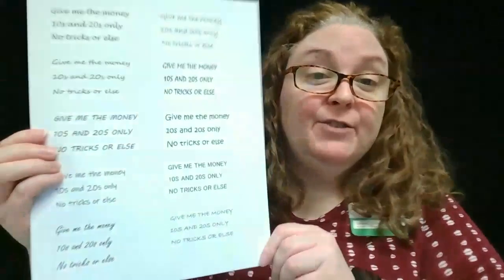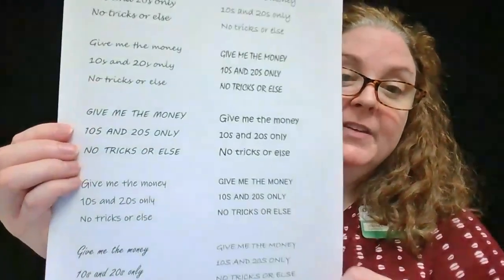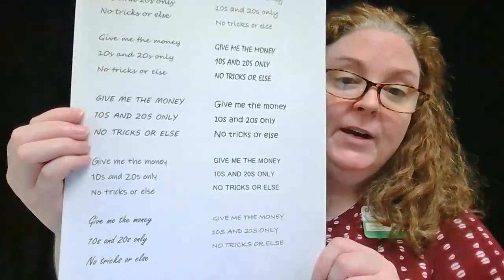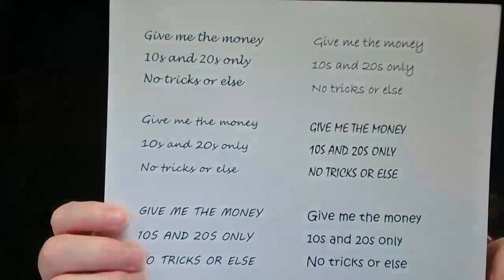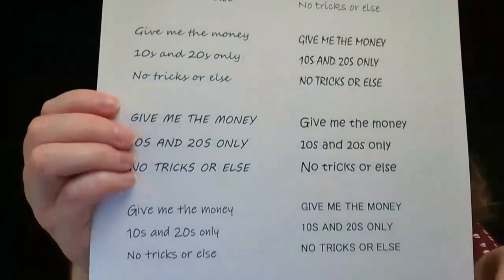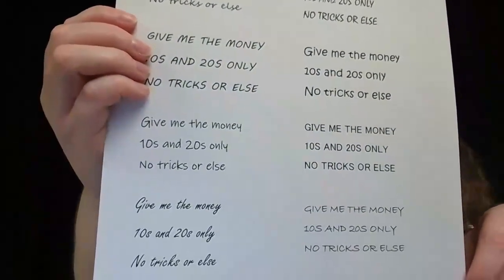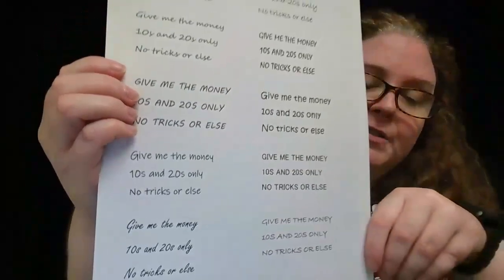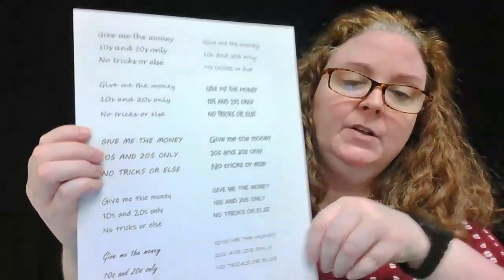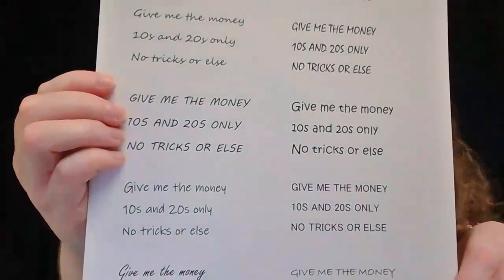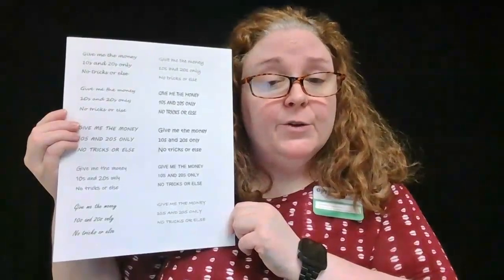Here's an example — in this case it's different fonts from a computer, but this will give you an idea of just how many different ways there are to write the same thing. This says: 'Give me the money, tens and twenties only, no tricks or else.' Some are all caps, some are not, some are in more cursive style, and some are block print — you can see why that would give investigators a lot of information to work with.